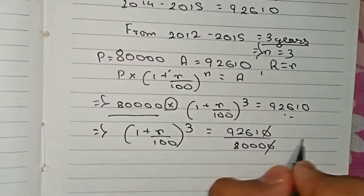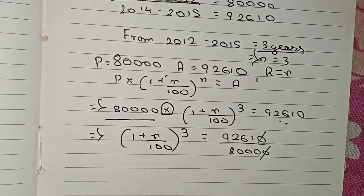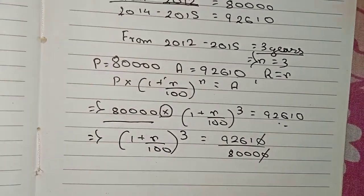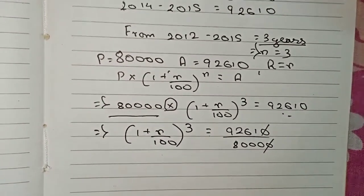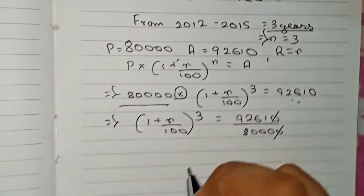So now you can see that 9,261 and 8,000 cannot be divided by any number, cannot be cut by any number. And now we have to find out such a number whose cube will be equal to 9,261.